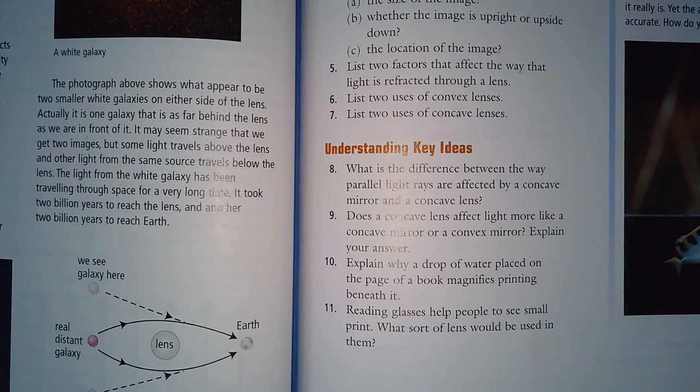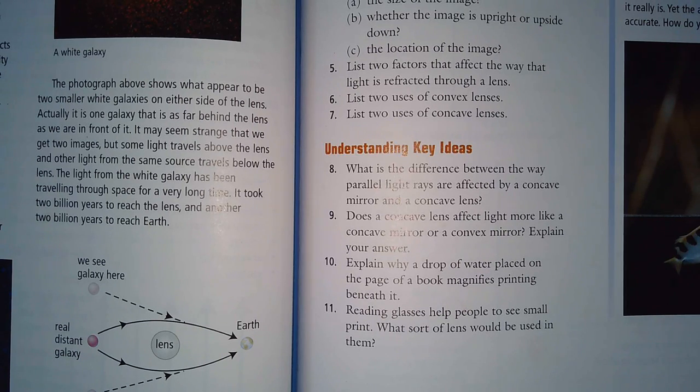Number ten: explain why a drop of water placed on the page of a book magnifies. You want to ask yourself what is the shape of a drop of water, and the shape is an oval. The oval is what resembles a convex lens. Again, a convex lens magnifies. Eleven: reading glasses help people to see small print, so what sort of lens would be used in them? Again, you're talking about magnifying, so that would be a convex lens.